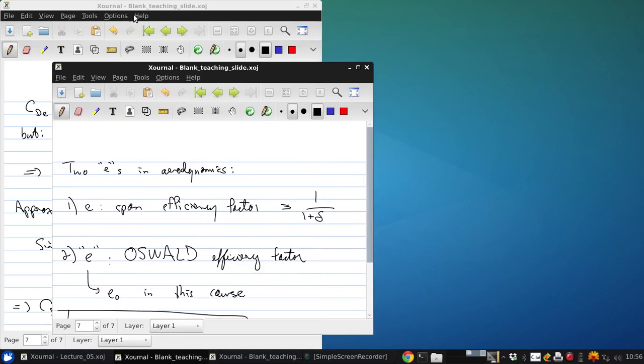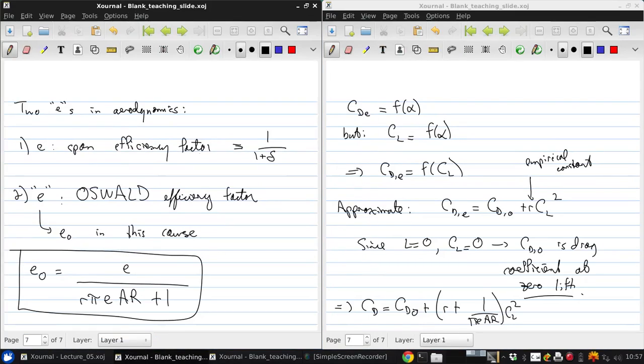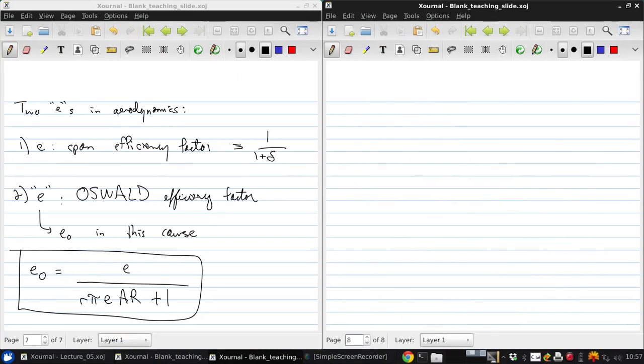And if we use that definition and put that into the previous equation, then what we get is that the drag coefficient for the total aircraft is the zero lift drag coefficient plus CL squared over pi e_O AR. So it looks a lot like the total drag coefficient for a wing except that we have CD0, the drag coefficient at zero lift here, instead of the parasite drag coefficient. And we have the Oswald Efficiency Factor instead of the span efficiency factor here.